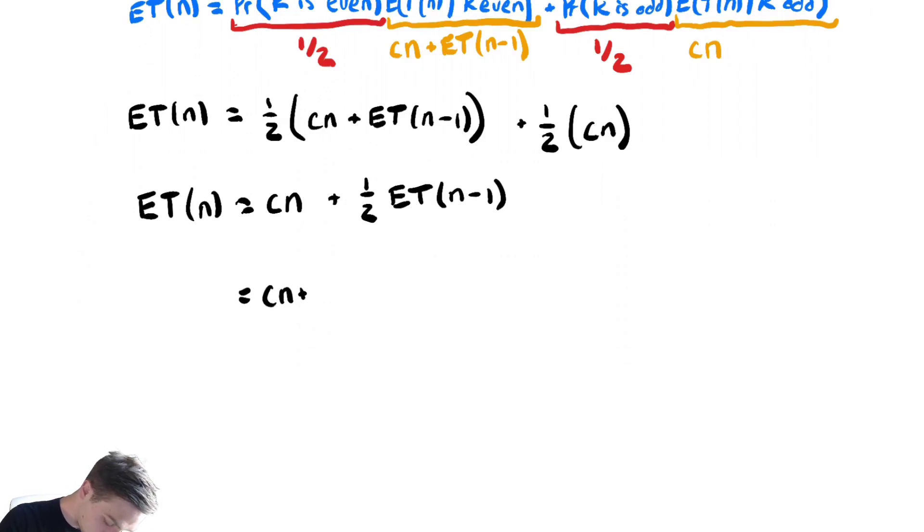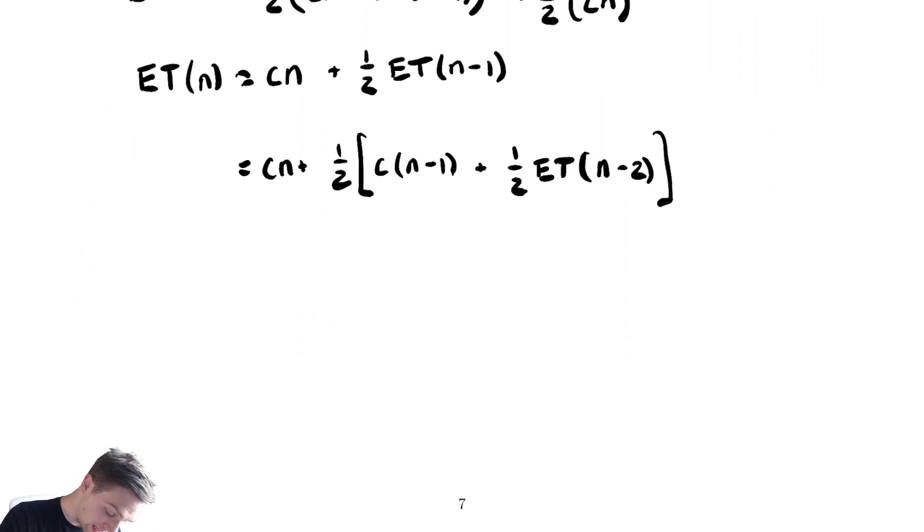Equals cn plus 1/2 times, make a substitution, plug in n-1 and we get c(n-1) plus 1/2 ET(n-2). Distribute our 1/2 and we get cn plus 1/2 c(n-1) plus, I'm going to write this as 1 over 2 squared ET(n-2).